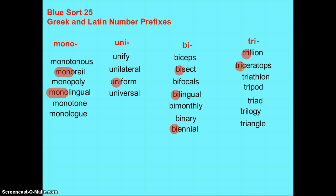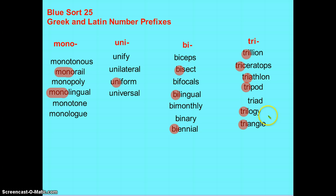The prefix tri means three. Triceratops — you all know what a triceratops looks like. It has three giant horns. A triathlon is when athletes compete in three different races all at once: biking, swimming, and running combined. A tripod that you might set your camera on has three legs. A triangle, which you're familiar with, has three sides and three angles. Have you ever watched or read a trilogy? Some of you have probably seen Star Wars, which is a trilogy. Some of you have probably read The Hunger Games, which is also a trilogy. So tri means three.